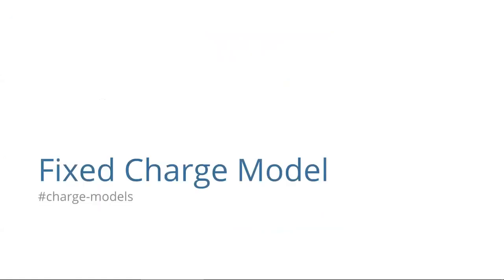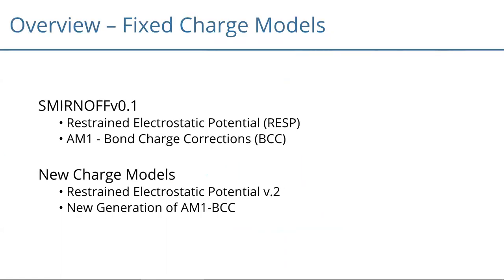I want to start with fixed charge models. Since Smirnoff is a sibling of GAFF, you can run them with the same charge models — RESP and AM1 BCCs. We currently use mainly AM1 BCC. With the new generation of Smirnoff, we also want new and better charge models: one idea is a new RESP implementation, and the other is a new generation of AM1 BCCs.